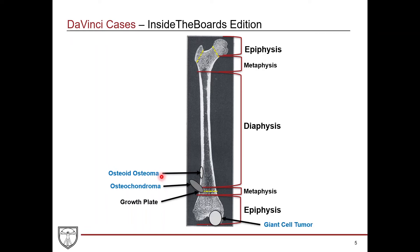Then you have giant cell tumors, which are found in the epiphysis. For USMLE purposes, this is really the only primary bone tumor you'll see in the epiphysis. These are all primary bone tumors — obviously metastases are much more common in the general population. Risk factors include prior radiation exposure and trauma. Giant cell tumors arise from osteoclasts — they're essentially big balls of osteoclasts — and have a lytic or destructive-looking appearance. They're still usually benign.